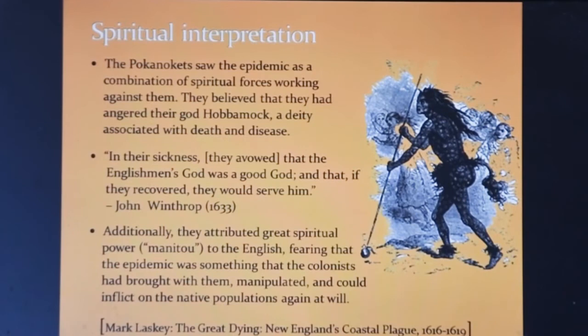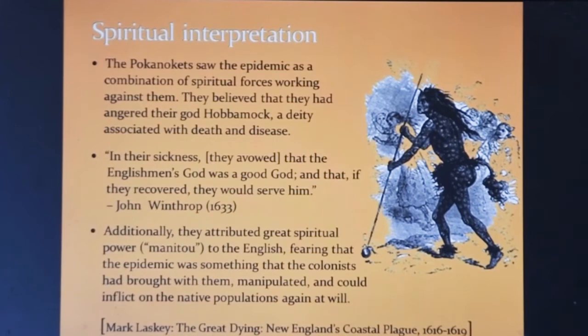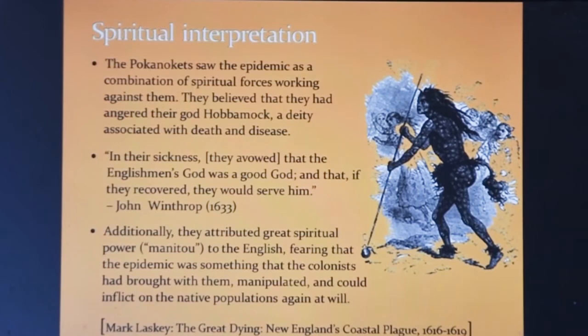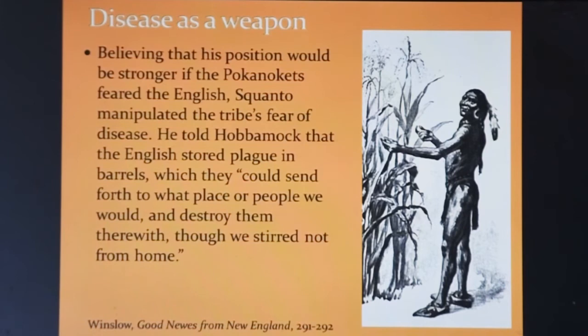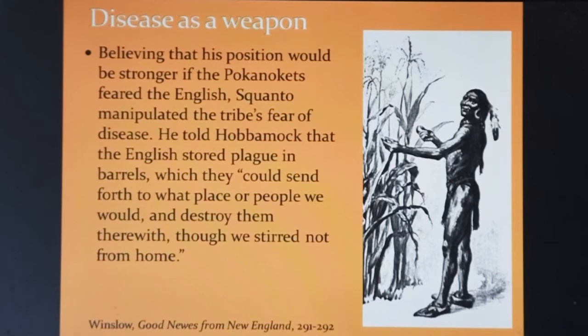The Pokanoket people saw the cause of the epidemic as a spiritual force, believing that the deity Hobbamock was angry with them. Some even vowed that they would serve the Englishman's god if they recovered. Others thought the English controlled the epidemic and could inflict it at will on the native population, despite assurances to the contrary by the English. Squanto, the first intermediary between the Pokanokets and the colonists, thought the English stored plague in barrels, which they could use to destroy the tribe.